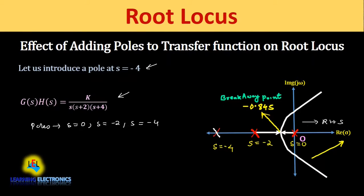Before adding the pole, the breakaway point was at S = -1. After adding the pole at S = -4, the breakaway point shifted to S = -0.845.